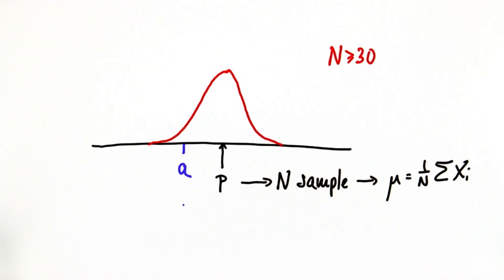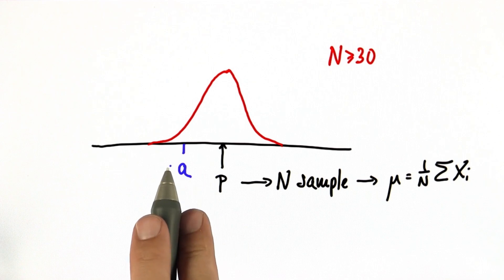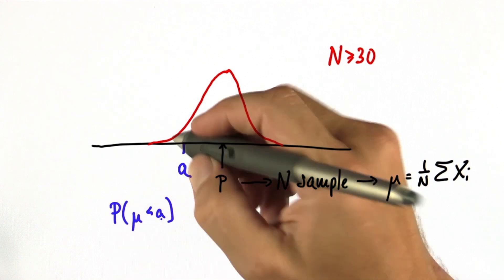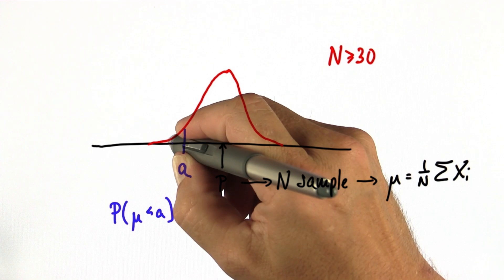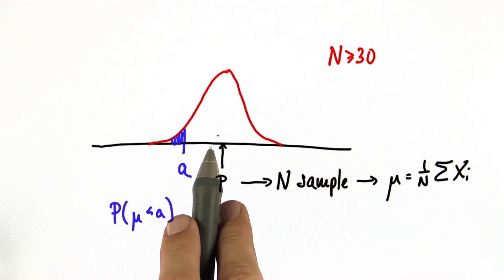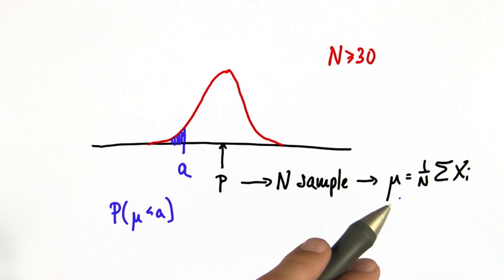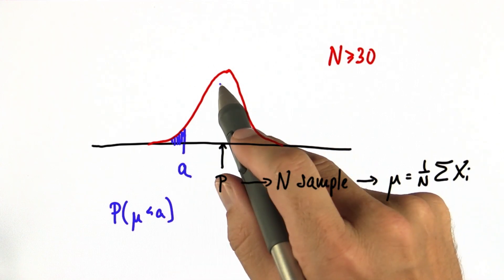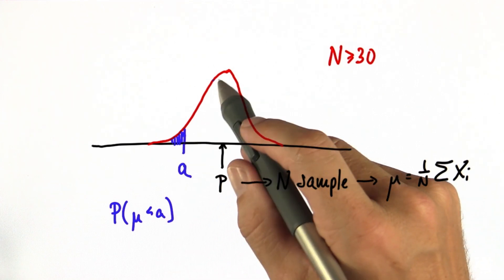For any value here, let's call this one a, the chances that we observe a μ that's smaller than a is the same as the surface area under the Gaussian over here. That's a trick you haven't seen, but the probability of deriving any μ is at least in the limit given by the height of this Gaussian.